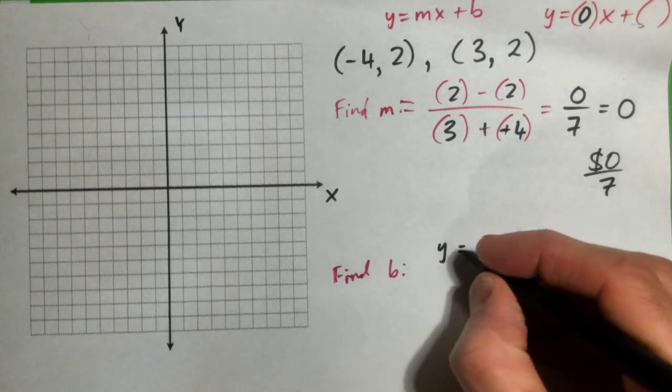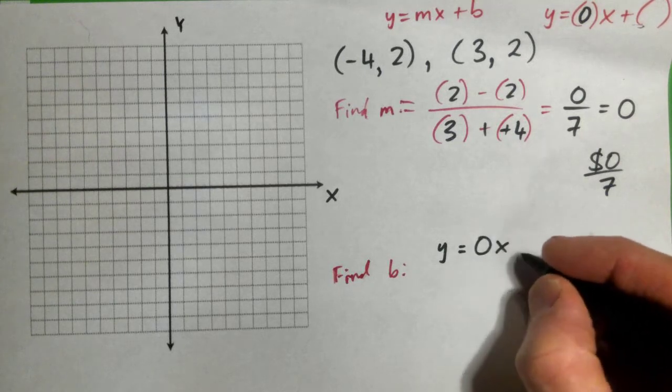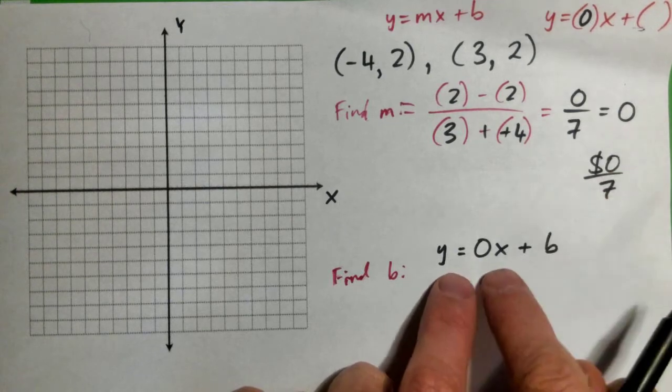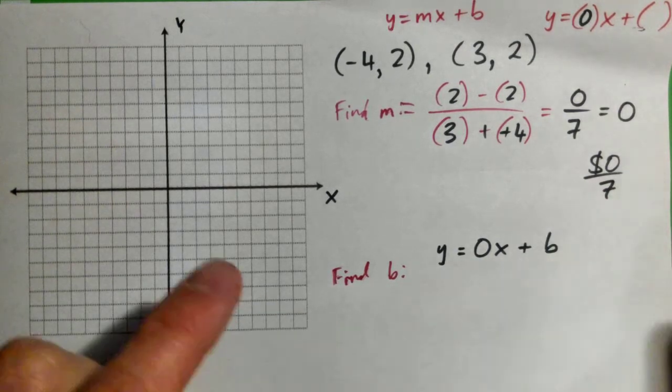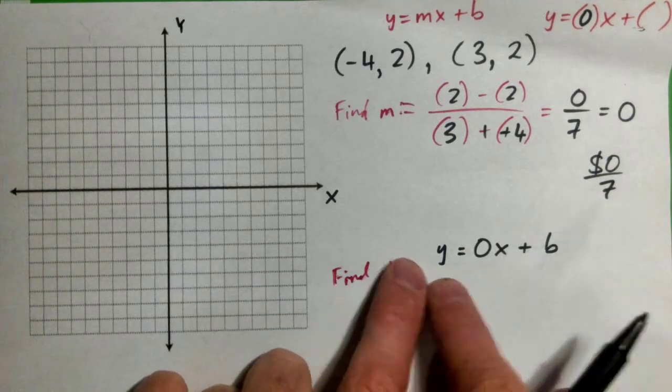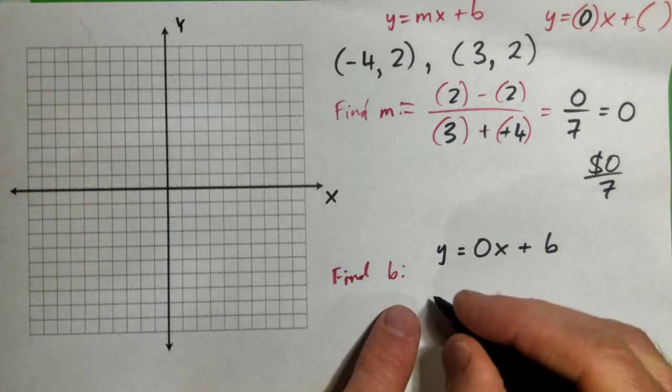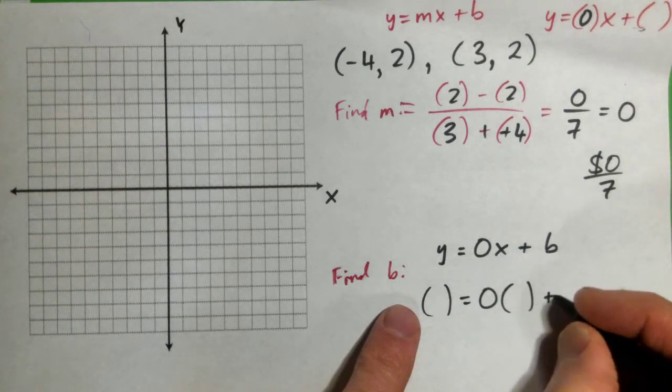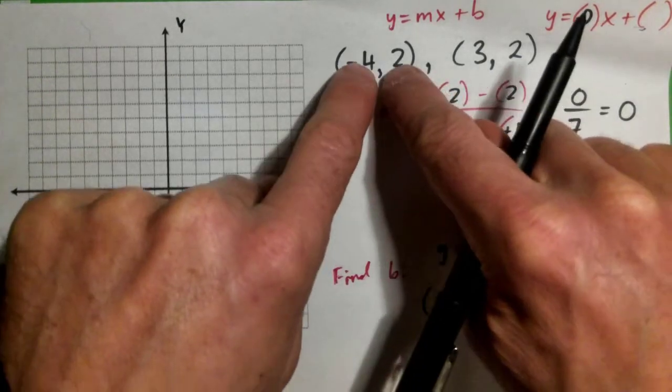So we have y = 0x + b, that's what we have so far because we found that m is 0. And we want to find b. Well, to find b, you can take a pair from this line and plug it in for x and y. Plug something in for y = 0 times x + b and plug something in for x.